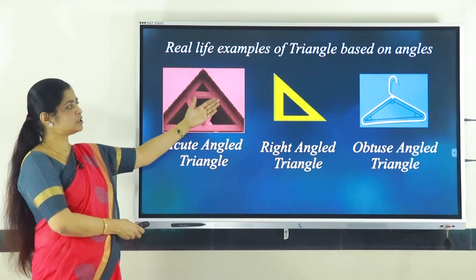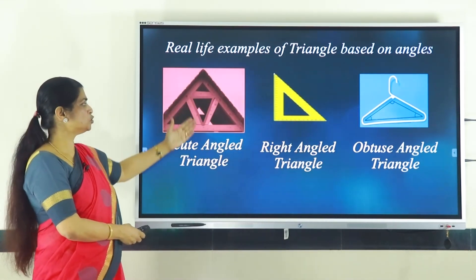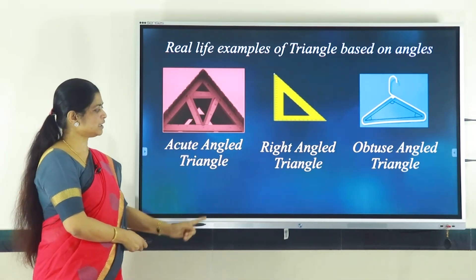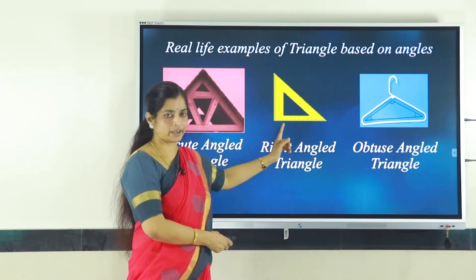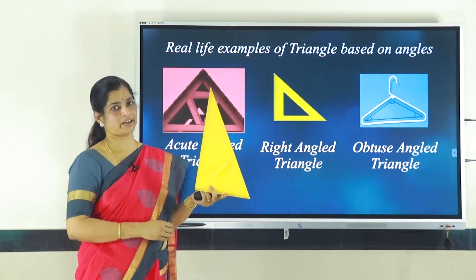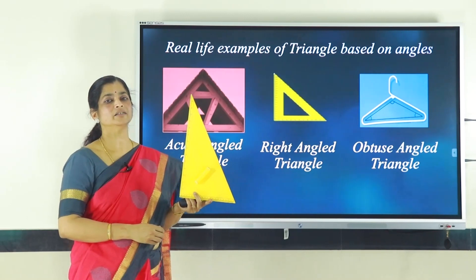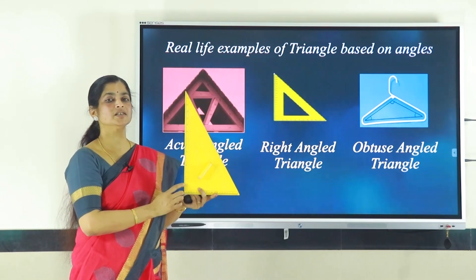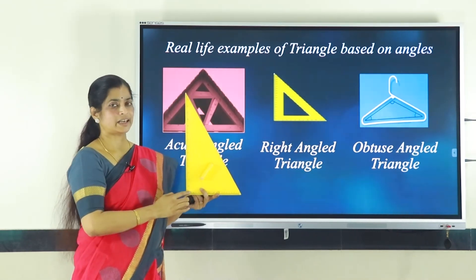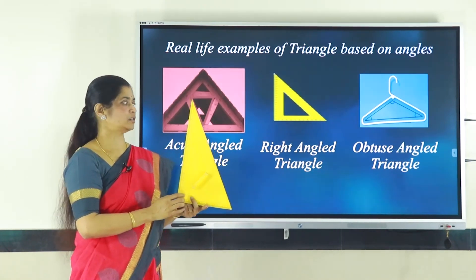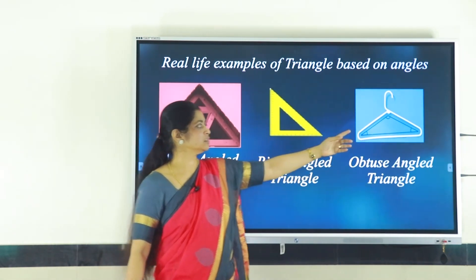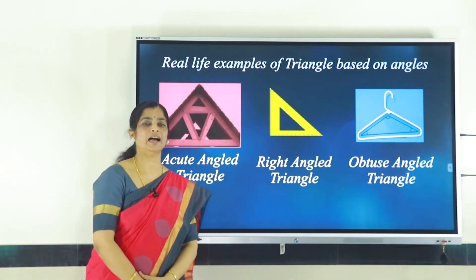Now let us see real-life examples based on angles. The roof is an acute angle triangle — all three angles are smaller than 90 degrees. A set square from your geometry box is a right angle triangle — the corner measures 90 degrees and the other two are less than 90 degrees. The last example is an obtuse angle triangle, where one angle is greater than 90 degrees.